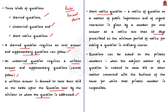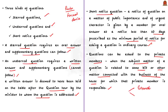Ten days is prescribed as the minimum period of notice for asking a question in ordinary course. In the question hour, questions can also be asked to private members when the subject matter relates to a bill or business of the house for which that private member is responsible. The Lok Sabha Secretariat recently decided to temporarily stop question hour due to the extraordinary situation caused by COVID-19 and to avoid assembling large numbers of officials in the galleries to practice social distancing.